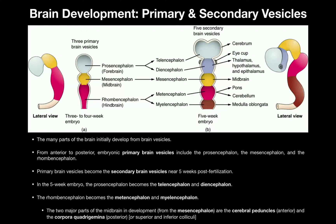In this video, we're going to discuss embryonic brain development. What we're going to see is that the parts of the brain that you actually study in the lab ultimately develop from what we call brain vesicles. There's two kinds: the initial ones are primary brain vesicles, and then we have secondary brain vesicles.